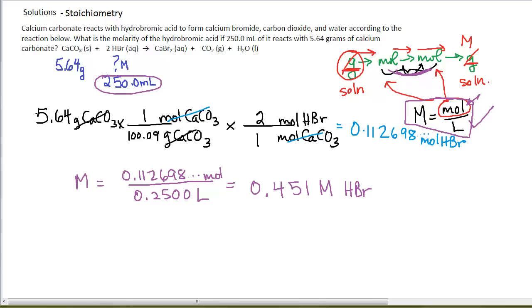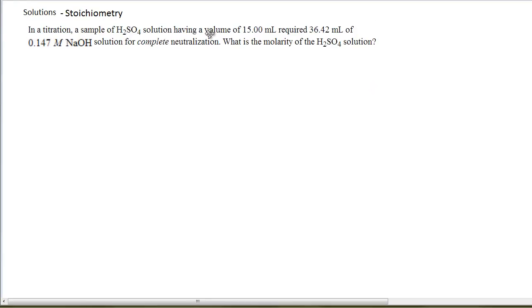A common way to ask a solution stoichiometry problem is by indicating that you're doing a titration. And this is a common technique in a laboratory. You'll actually be doing an experiment over this. All right, here is our question. In a titration, again, this is a solution stoichiometry procedure. This is a procedure in the laboratory that you use, a titration.